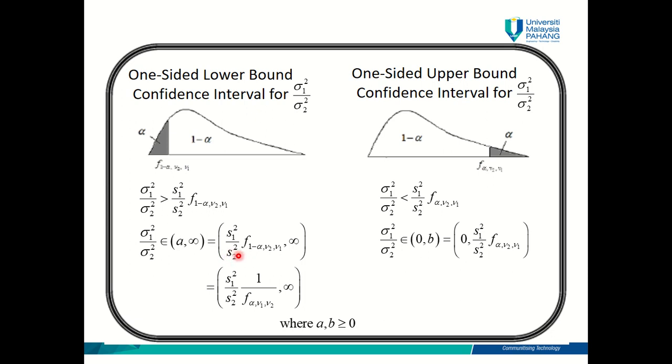And similar to the one I explained to you in part 1, chapter 2.7, F₁₋α is also equivalent to 1 over Fα. Okay, can you see the difference here? 1 minus alpha becomes alpha. Why 1 minus alpha? It's not 1 minus alpha over 2 because this is one-sided. Okay, this is one-sided. So it's only 1 minus alpha. Change to alpha. And then ν₂, ν₁ here swap with each other and becomes ν₁, ν₂.